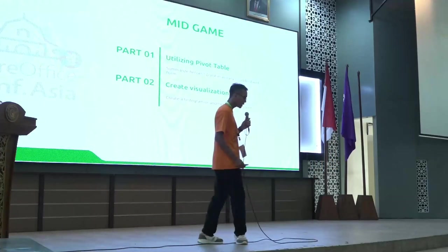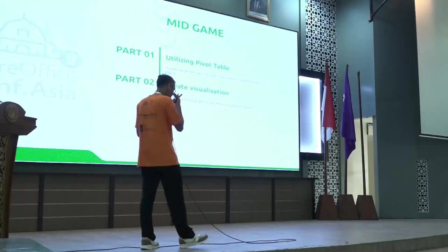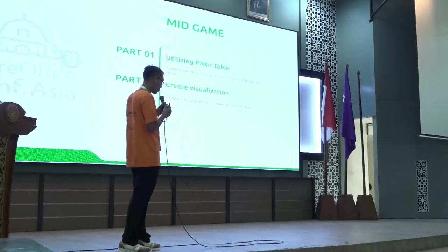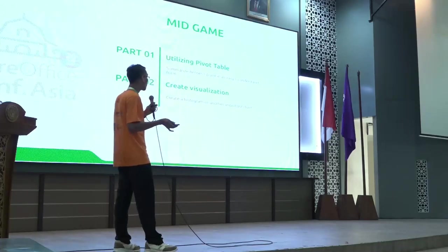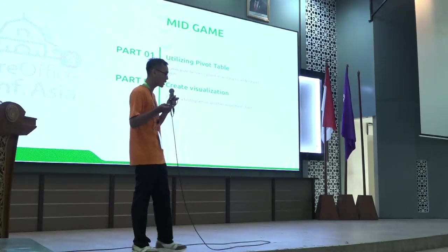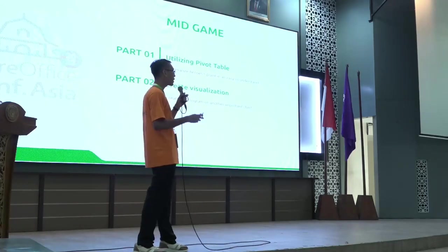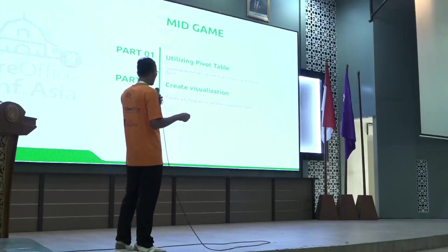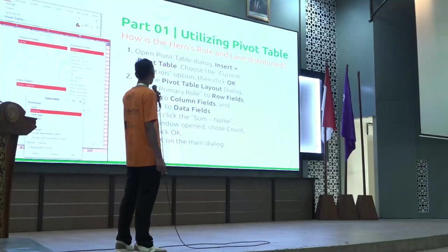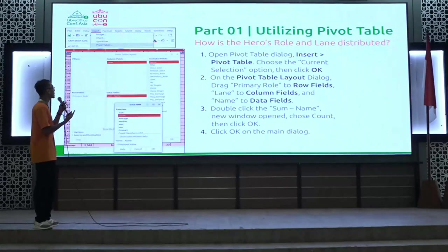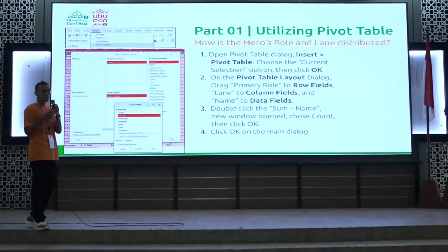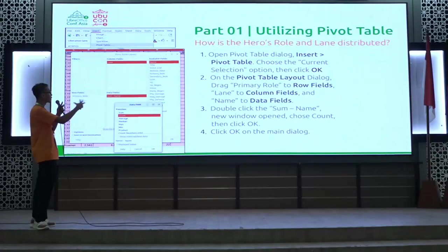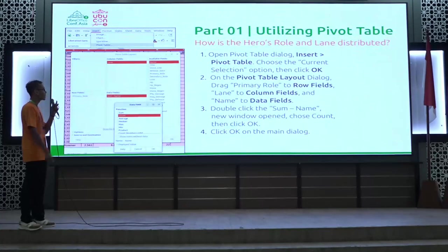Okay, that was part one. Now we can go to more difficult things. We're in the big game now — we can do a pivot table. The question is: how are the hero roles and lanes distributed? How did the game developer distribute heroes across roles and lanes?